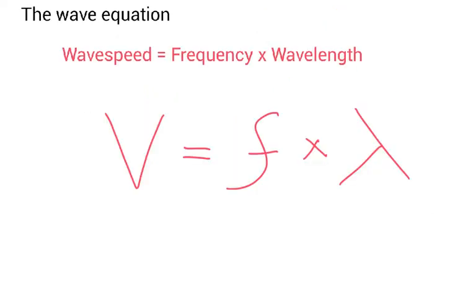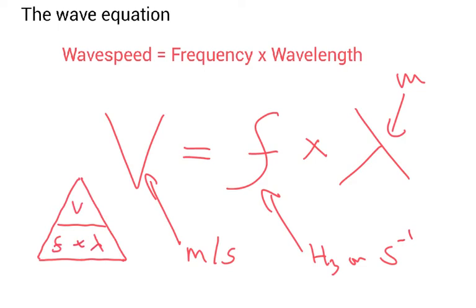Now one thing you have to learn is the wave equation. The wave equation states that the wave speed is equal to the frequency times the wavelength. So the wave speed is in metres per second, frequency is in hertz, or per second, and then the wavelength is in metres. The triangle here that I've just drawn in the left-hand corner. Well, if you want to work out wave speed, it's frequency times by wavelength. If you want to work out the frequency, it's wave speed divided by wavelength. And finally, if you want to work out the wavelength, it's the wave speed divided by the frequency.